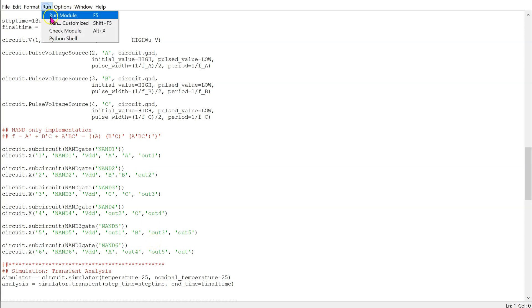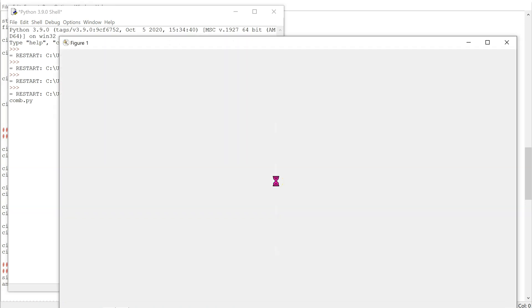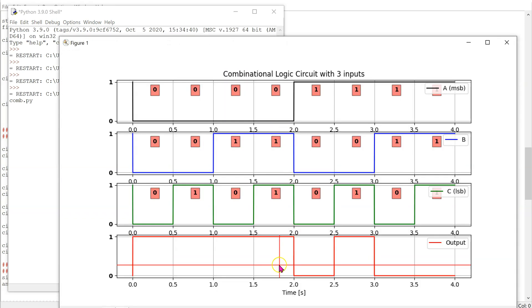When we run this code, we get the outputs or the timing waveforms. We can see that the inputs are cycling through the rows of the truth table in the correct sequence, starting from 0 0 0, 0 0 1, 0 1 0 and so on. And this is the output of this digital circuit.